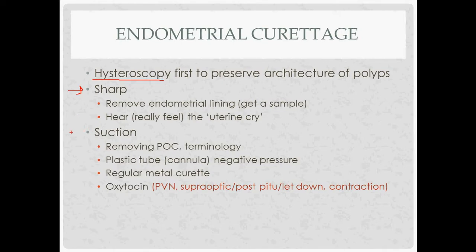The other way to do curettage is by using suction — mainly used for removing larger amounts of tissue, such as products of conception. Reviewing abortion terminology: a threatened abortion is vaginal bleeding less than 20 weeks; an inevitable abortion builds on that, adding cramps and cervical dilation; a complete abortion means all products of conception have been delivered, while an incomplete means some remain inside the uterus. Completes tend to happen before 12 weeks, incompletes after 12 weeks.